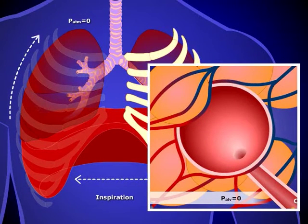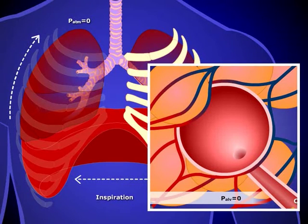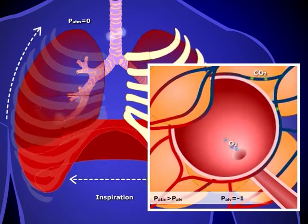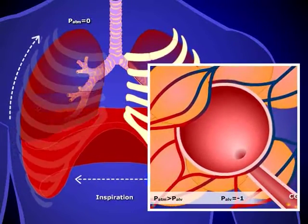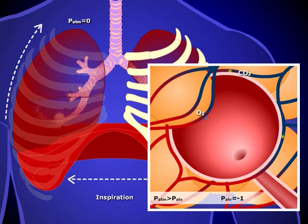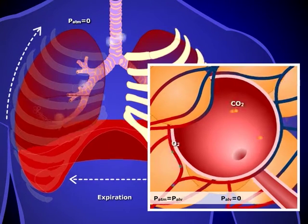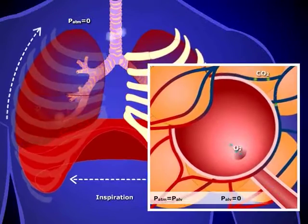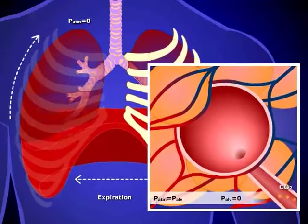Before inspiration, alveolar pressure is equal to atmospheric pressure, which is zero. At this point, there is no movement of air in or out of the lungs. During inspiration, the diaphragm and the intercostal muscles contract, increasing thoracic volume. As the lungs expand, alveolar volume increases and alveolar pressure decreases. At this point, alveolar pressure, which is negative one, is less than atmospheric pressure. This difference in pressure causes air to flow into the lungs. At the end of inspiration, inflow of air returns alveolar pressure toward zero. When it reaches zero, air flow stops.